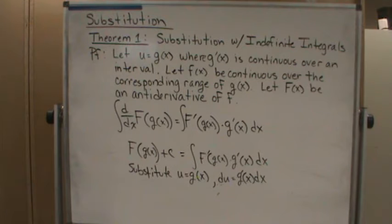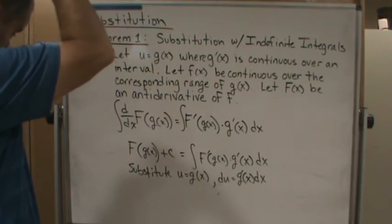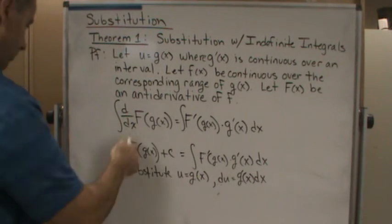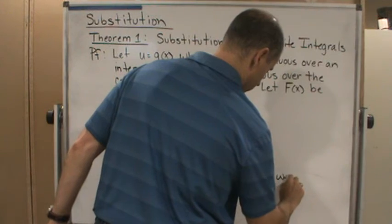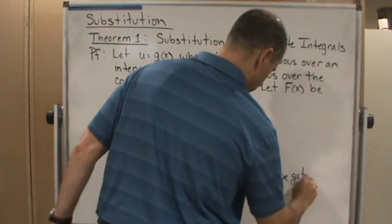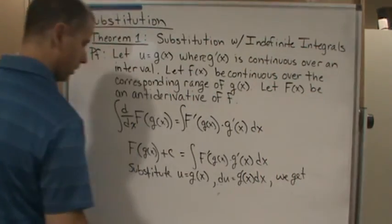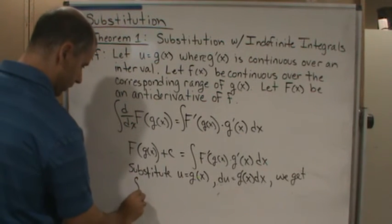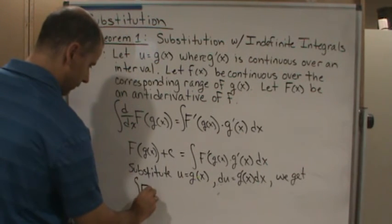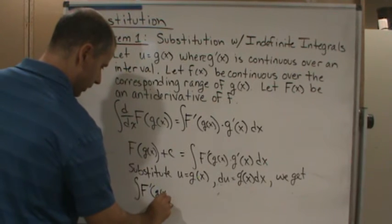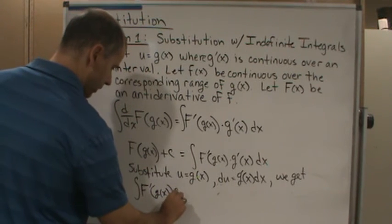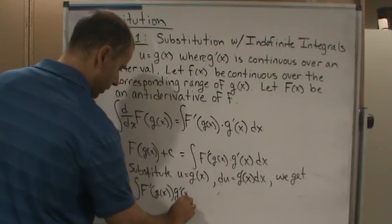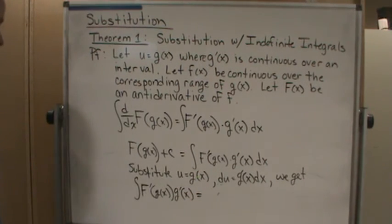And so now, what do we get? We get the integral of F prime of g of x times g prime of x is equal to what?